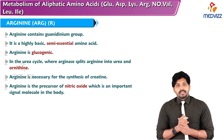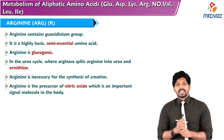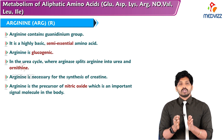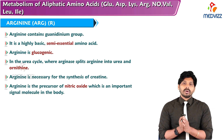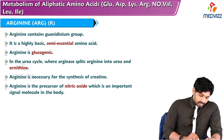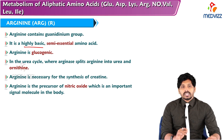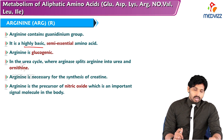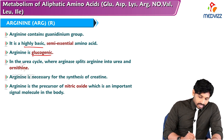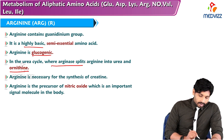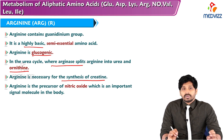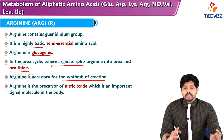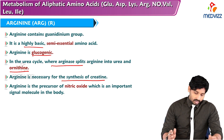The next basic amino acid is arginine. Arginine is a semi-essential amino acid along with histidine — up to a certain age both are required in the diet. Histidine, arginine, and lysine are all three highly basic in nature. Arginine is glucogenic. In the urea cycle, arginase splits arginine into urea and ornithine. Arginine is necessary for synthesis of creatine — glycine, arginine, and methionine are the three amino acids required in making creatine.